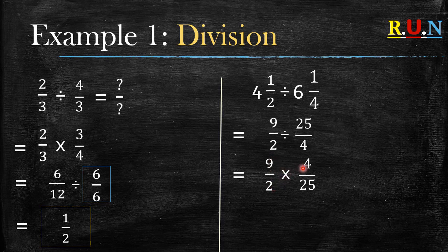Now from this point you can change the division sign to multiplication, so you say 9 over 2 multiplied by 4 over 25. It is 4 over 25 because you changed the division sign to multiplication, so the 25 over 4 needs to change — whatever was on top goes to the bottom, whatever was at the bottom goes to the top.